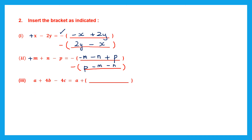Question 3. a plus 4b minus 4c on the left hand side; on the right, only a has been taken. We need to insert the other two terms inside the bracket. Check the sign — it is plus. So the signs of all terms will not change; they remain the same. Plus 4b stays as 4b, minus 4c stays as minus 4c. No change.